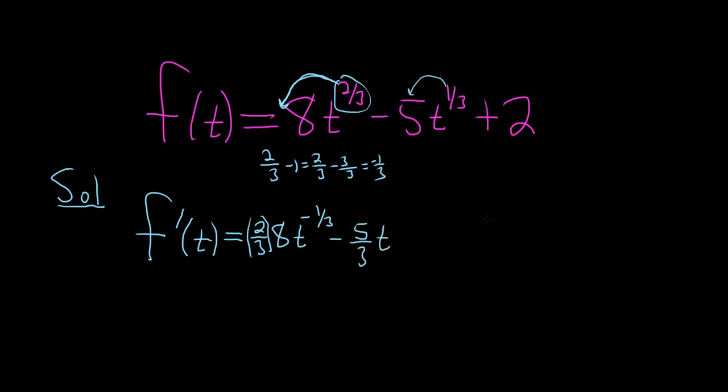Except this time it's 1 third minus 1 which is 1 third minus 3 thirds which is negative 2 thirds and the derivative of 2 is 0. Again I'll show the work for this one. It's 1 third minus 1 which is really 1 third minus 3 thirds which is negative 2 thirds. Eventually you do it in your head.